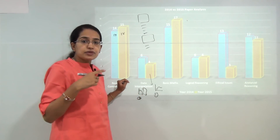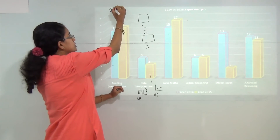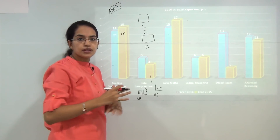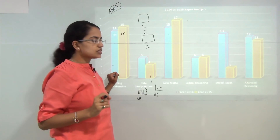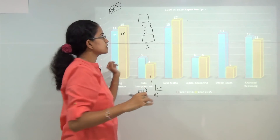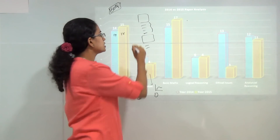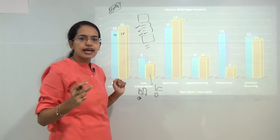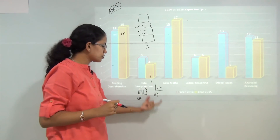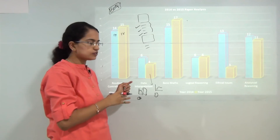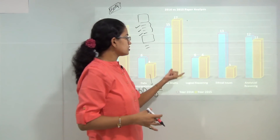In 2015, each graph had only one question, meaning you had to apply more time per graph. Since there are only 80 questions, some students might feel there is ample time, but when questions are individual, you lose the benefit of reusing calculated values across multiple questions on the same graph. For a second graph, you have to redo calculations with different values, so you must devote more time to solve these problems.